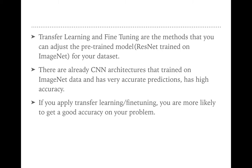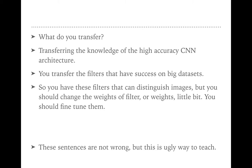Transfer learning and fine-tuning are methods that let you adjust a pre-trained model for your own datasets. For example, you pick ResNet that has been trained on ImageNet and already has weights. If you apply the same architecture with the same weights and fine-tune it — detecting the right parameters — you can get good accuracy in a short amount of time on your dataset, even if the datasets are not closely related. There are already convolutional network architectures trained on ImageNet with very accurate predictions, so why not use their weights in our projects?